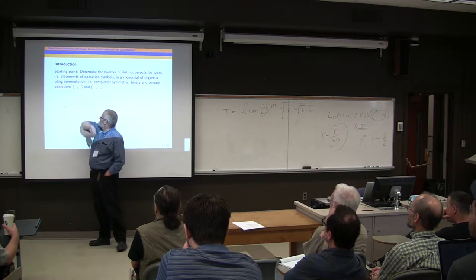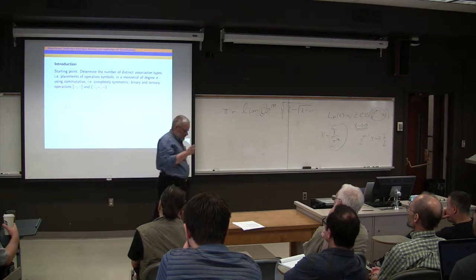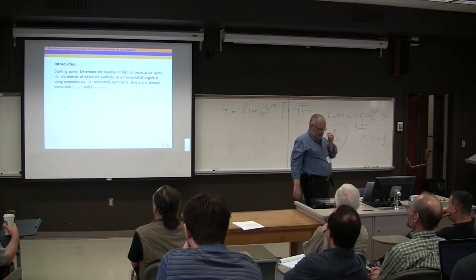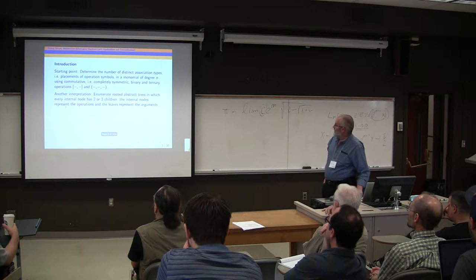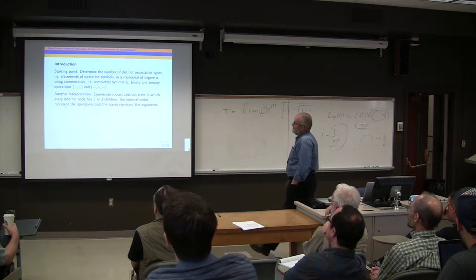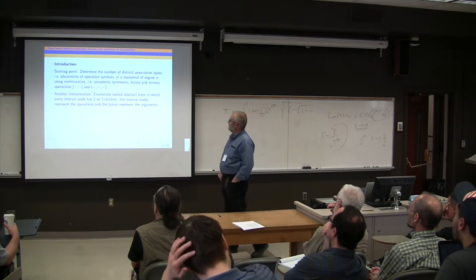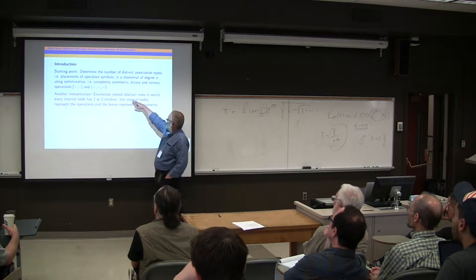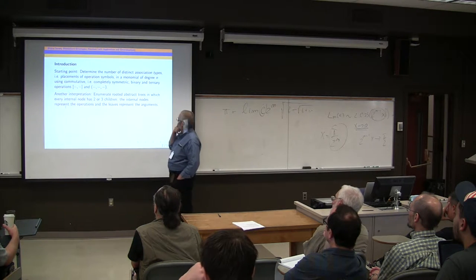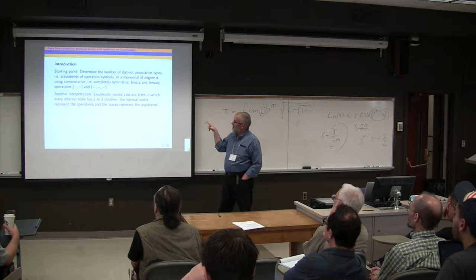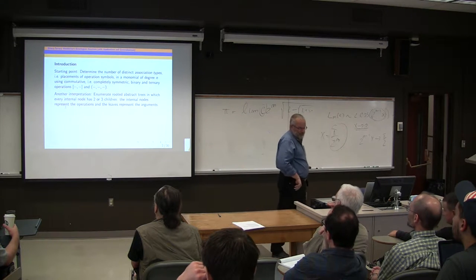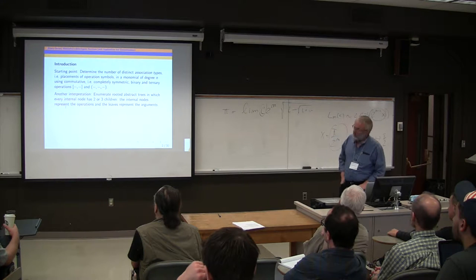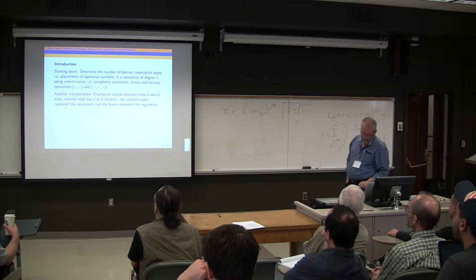I'm using square brackets for the binary operation and ordinary parentheses for the ternary operation. So it turns out another way to interpret these numbers is that we are enumerating rooted abstract trees in which every internal node has two or three children.